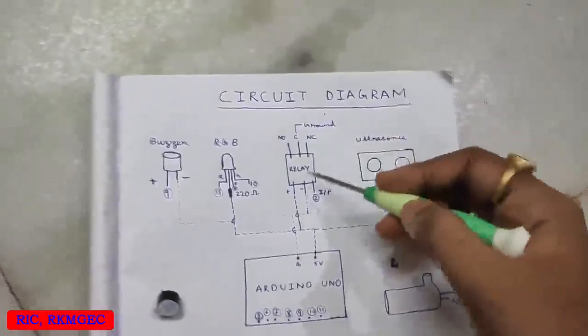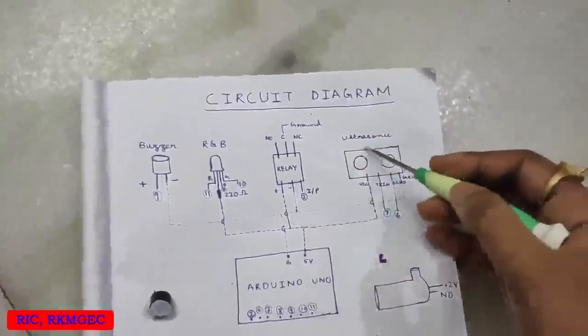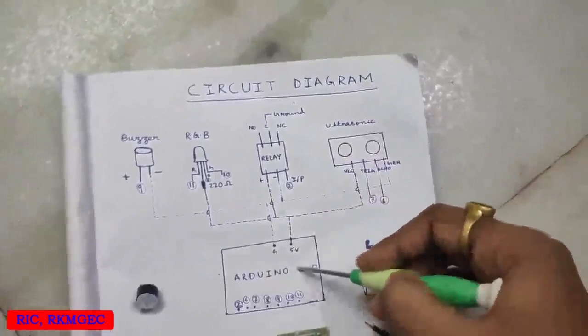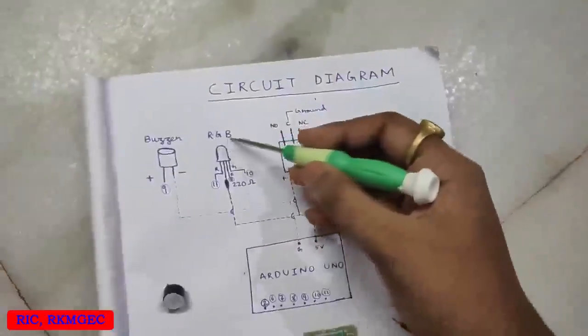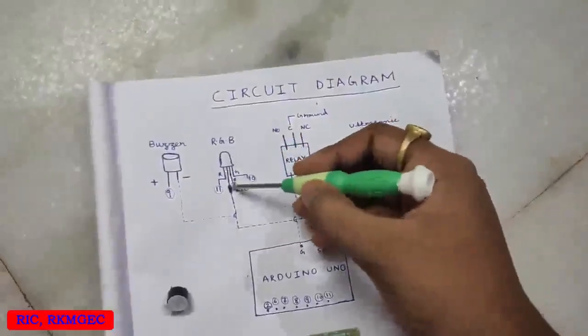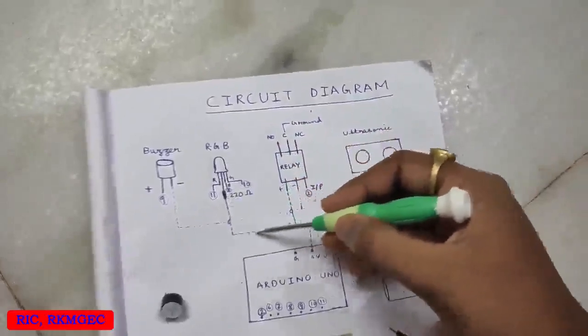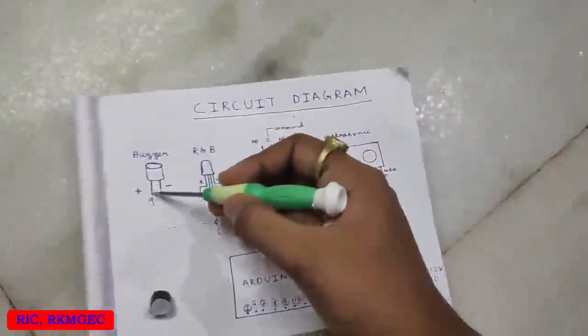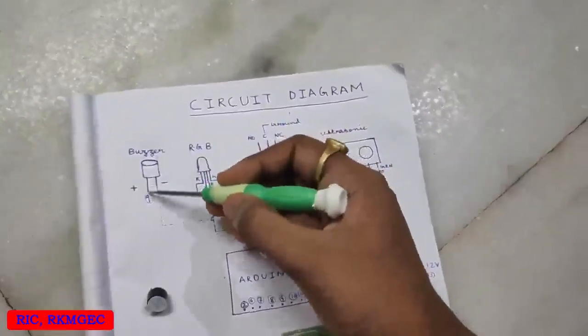For the buzzer the ground pin, for the relay the ground pin, and ultrasonic sound sensor the ground pin will be connected to the ground pin of the Arduino. For the RGB LED light it is a common anode so we are going to directly connect it with the 5 volt power supply. The positive terminal of the buzzer will be connected to the ninth digital pin.